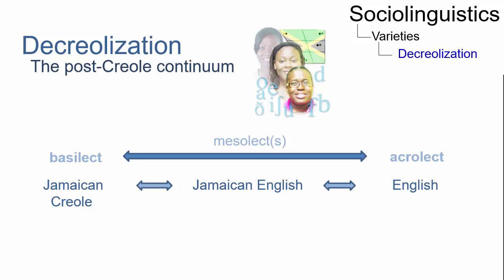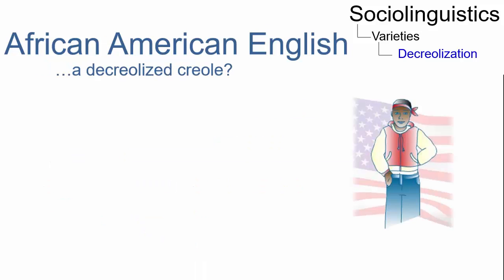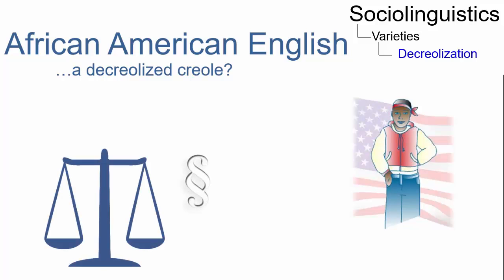Moreover, there is a theory that African American English is a decreolized Creole as well, originating from a basilectal slave Creole to become an English mesolect. It was suggested that when African Americans achieved equality under the law, the increased contact with the standard variety of American English and the increased opportunity for social mobility resulted in the loss of some basilectal features of the slave Creole.